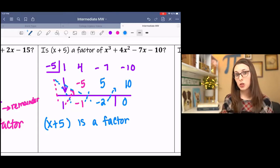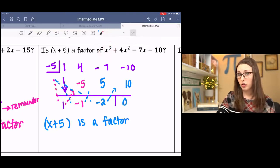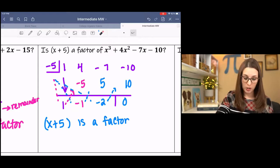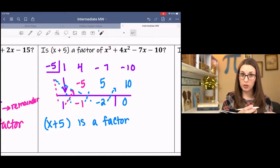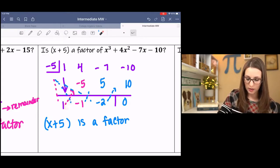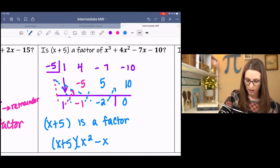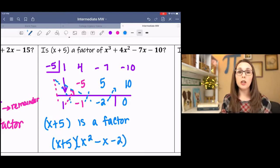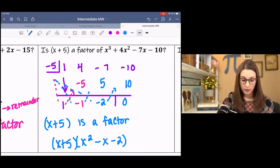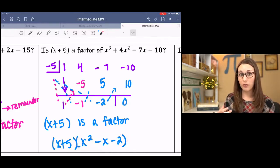And the reduced polynomial. We started with x to the third. So the reduced polynomial goes down a power because we've divided by an x. So it reduces it down. 1x squared minus x minus 2. So we can write this as x plus 5 times x squared minus x minus 2. Now we could keep going and we could use synthetic division again to break it down further.